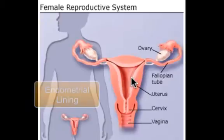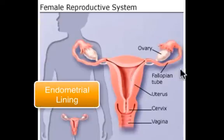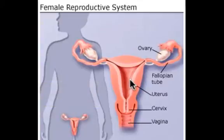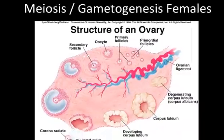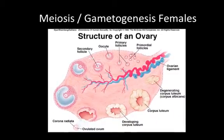The uterus has a lining called the endometrial lining — tissue specifically built up to receive a fertilized egg. The endometrial lining supports a developing zygote into an embryo and then a fetus. Other features of the uterus include the cervix, which is a circular muscle at the opening of the uterus, and then the vagina.